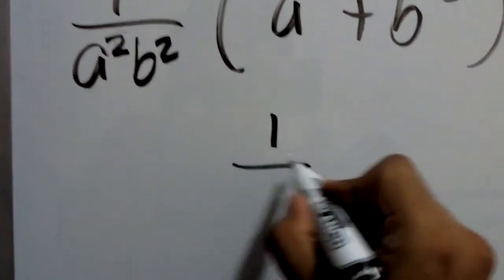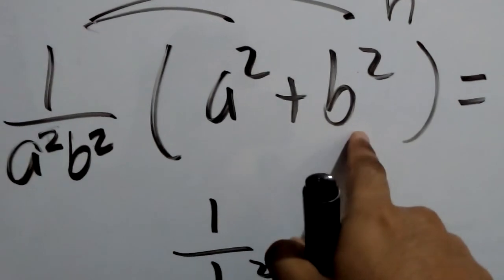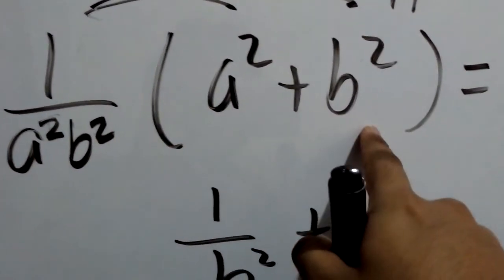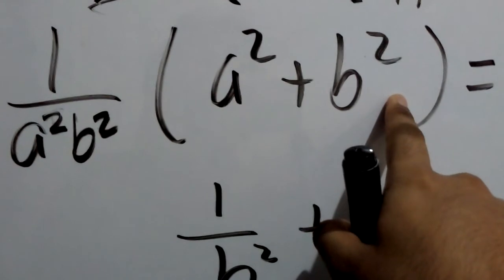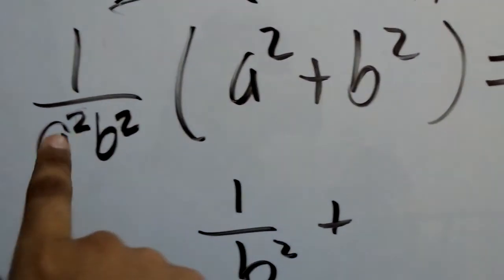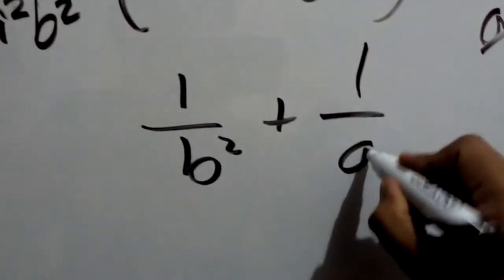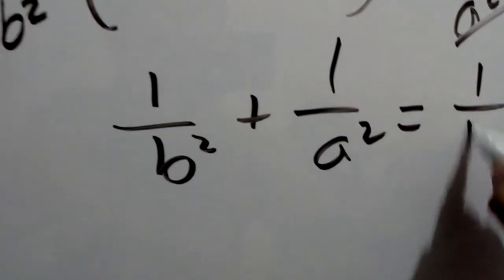It's 1 over b squared plus, and here will happen the same. This b squared will cancel with this b squared, it will divide and get 1, and you will be left with 1 over a squared. 1 over a squared equals 1 over h squared.